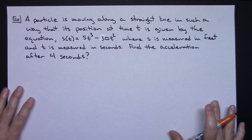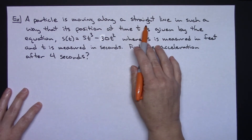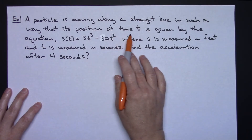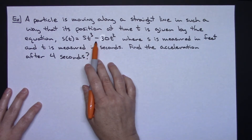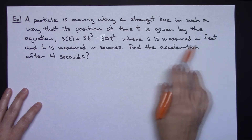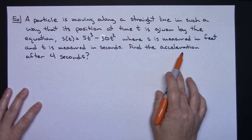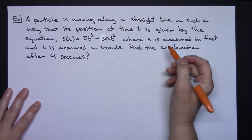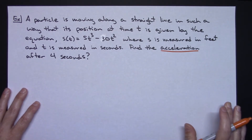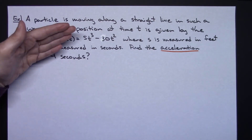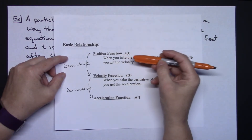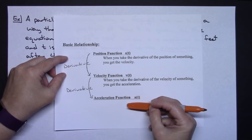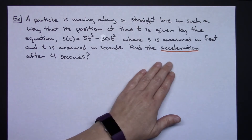Let's take a look at another example. A particle is moving along a straight line such that its position at time t is given by s of t equals 5t cubed minus 30t squared, where s is measured in feet and t is measured in seconds. Find the acceleration after 4 seconds. Remembering the relationship: if you have the position function, you take the derivative once to get velocity, and take the derivative a second time to get acceleration.